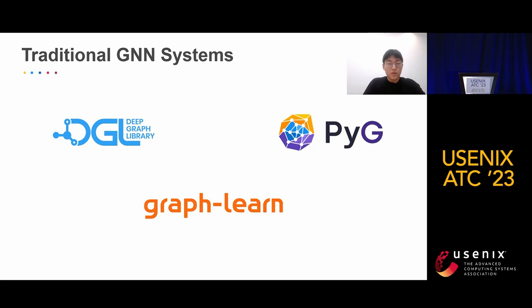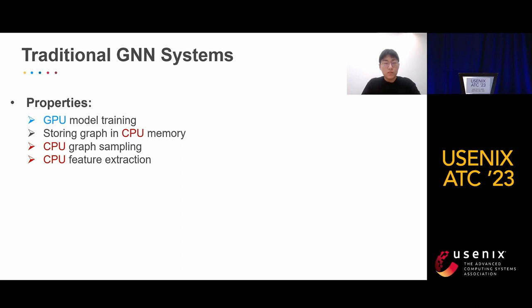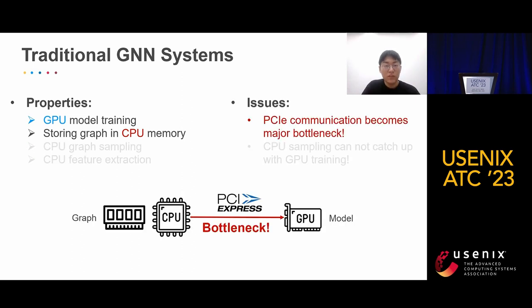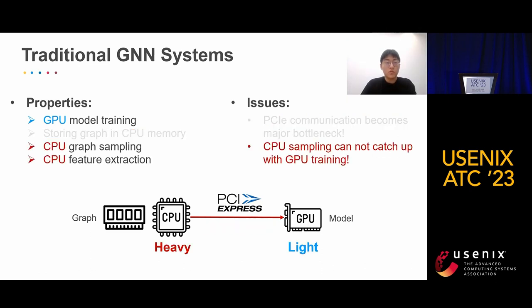To ease the development and training of GNN models, systems like DGL, PyG, and GraphLen are proposed. Typically, these systems use GPU to train models, store graphs in CPU memory, and use CPU to execute graph sampling and feature extraction. However, these properties bring severe issues. First, since the PCIe bandwidth is orders of magnitude lower than GPU or CPU memory, with a large data transferring footprint of GNN, PCIe communication becomes the major bottleneck. Second, many researchers have also found that CPU sampling cannot catch up with GPU training.